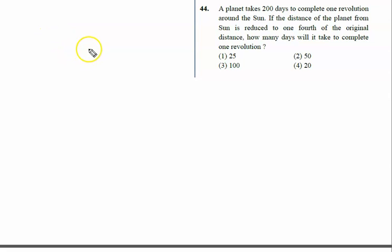A planet takes 200 days to complete one revolution around the sun. This is the sun and this is the planet. And the time period of rotation is given to us, that is 200 days.